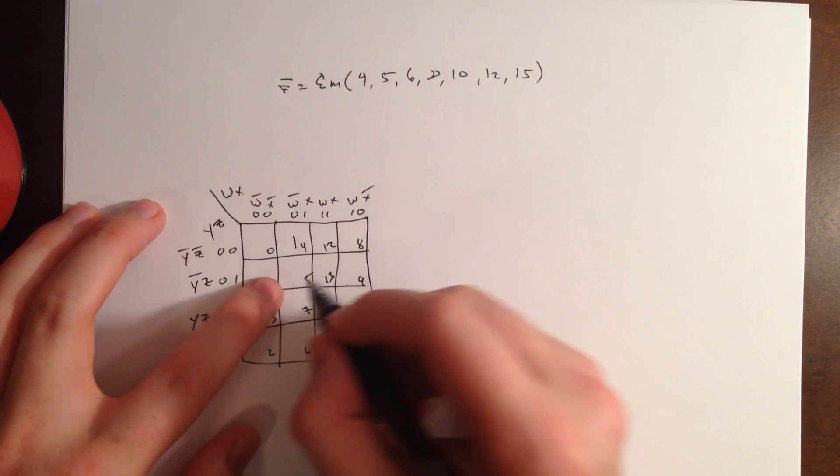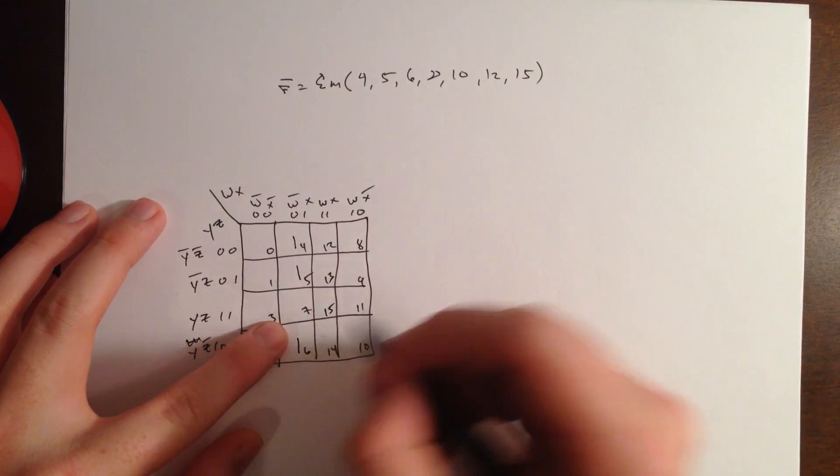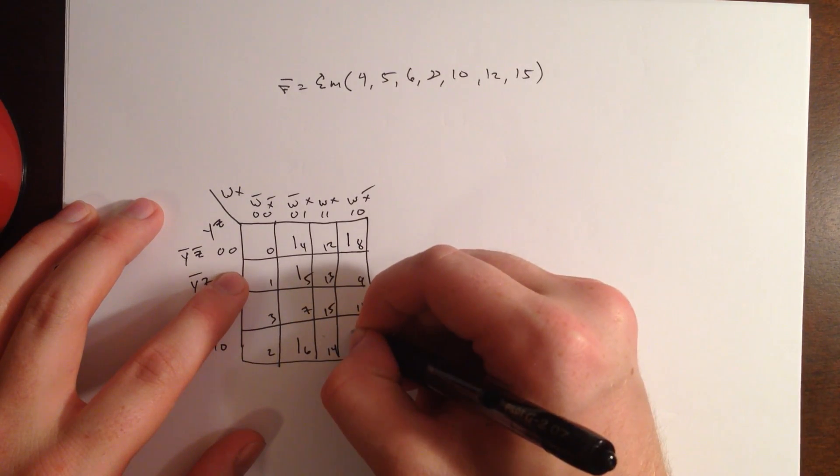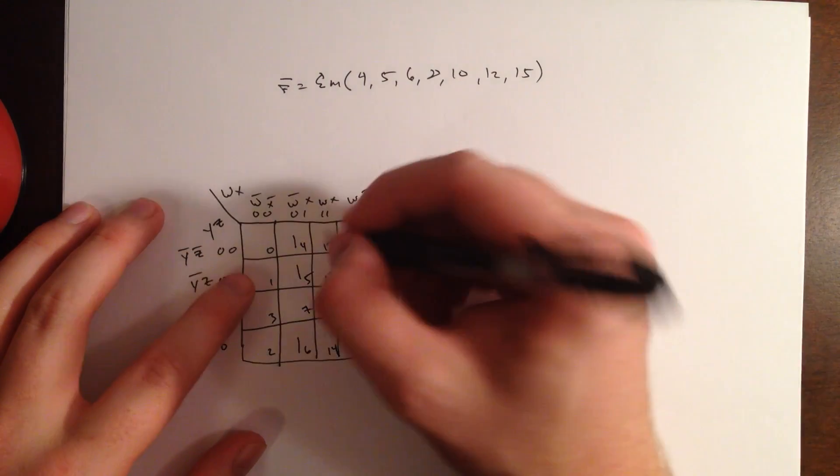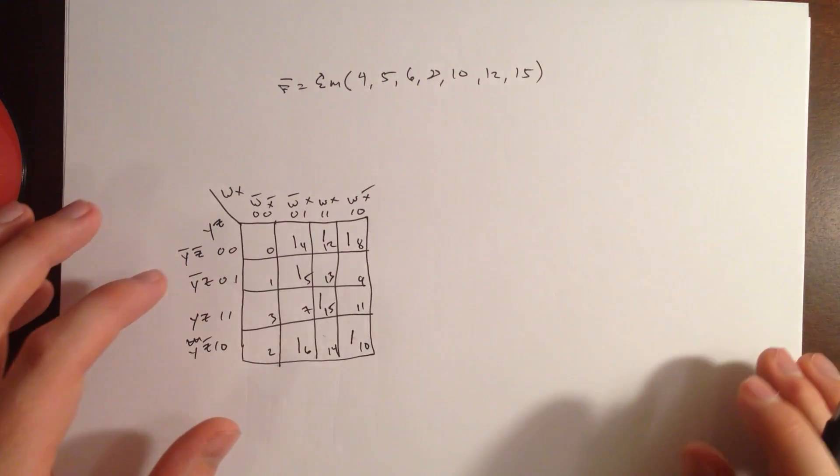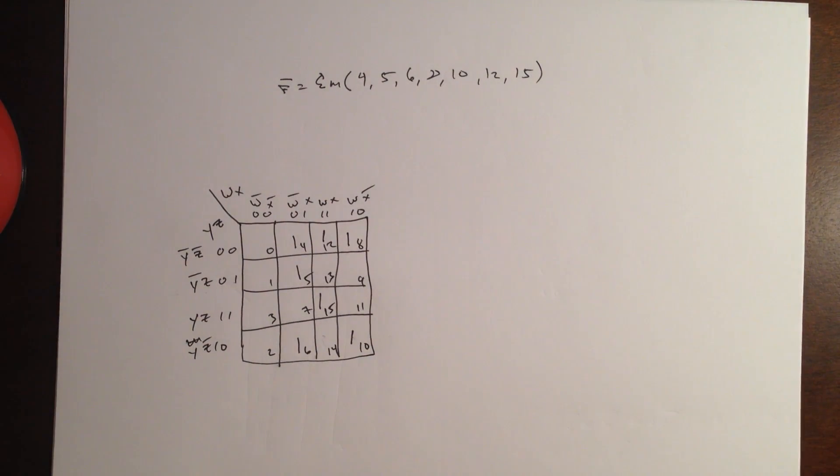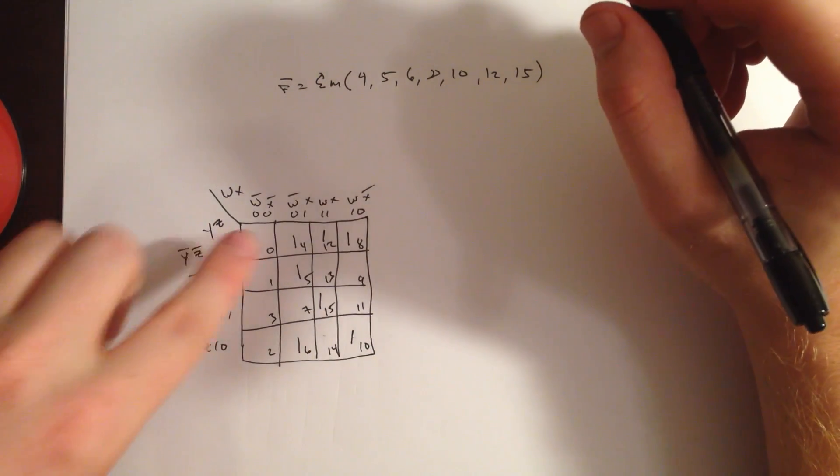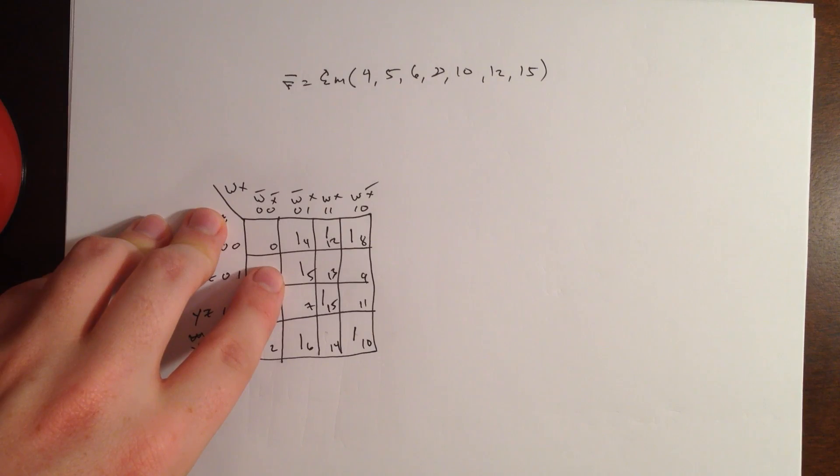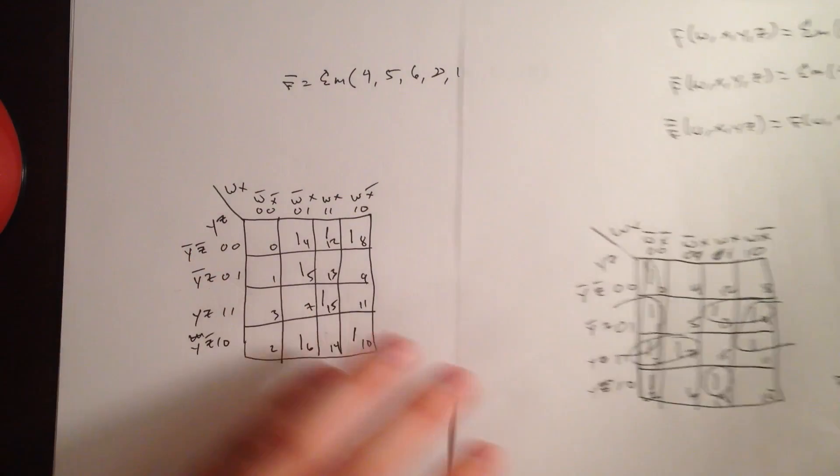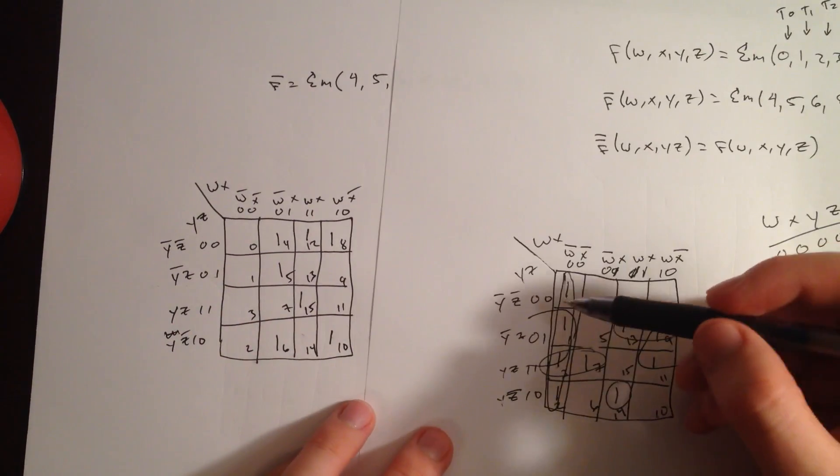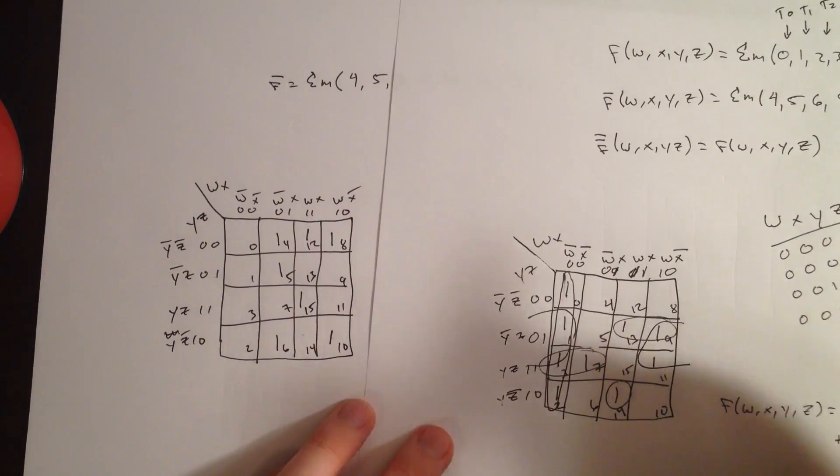Okay, well we have a 1 at 4, a 1 at 5, a 1 at 6, a 1 at 8, a 1 at 10, a 1 at 12, and then a 1 at 15. That looks about right. Make sure I didn't make any mistakes on that one. Okay, yeah, I don't think I did. So, this right here should all just be 0s, which should have been 1s on our previous kmap. So, yep, that looks correct.